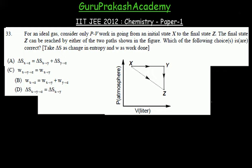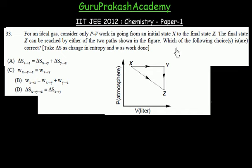This question covers the concept of thermodynamics. An ideal gas considering only PV work — that is expansion work — goes from an initial state X to a final state Z. The final state Z can be reached by either of the two paths shown in the figure. We need to determine which of the following choices are correct, where delta S is the change in entropy and W is the work done.